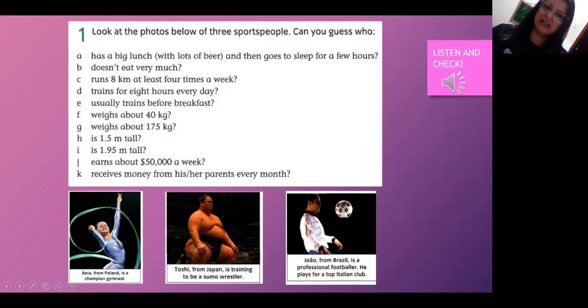Who has a big lunch with lots of beer and then goes to sleep for a few hours? Então, quem desses três vocês acham que é mais provável que almoce e beba muita cerveja e em seguida vá dormir? É o Toshi. Letter B. Who doesn't eat very much? Quem que pouco come? Dentre esses três. Yes, this is Anja. Who runs 8 kilometers at least 4 times a week? This is João.